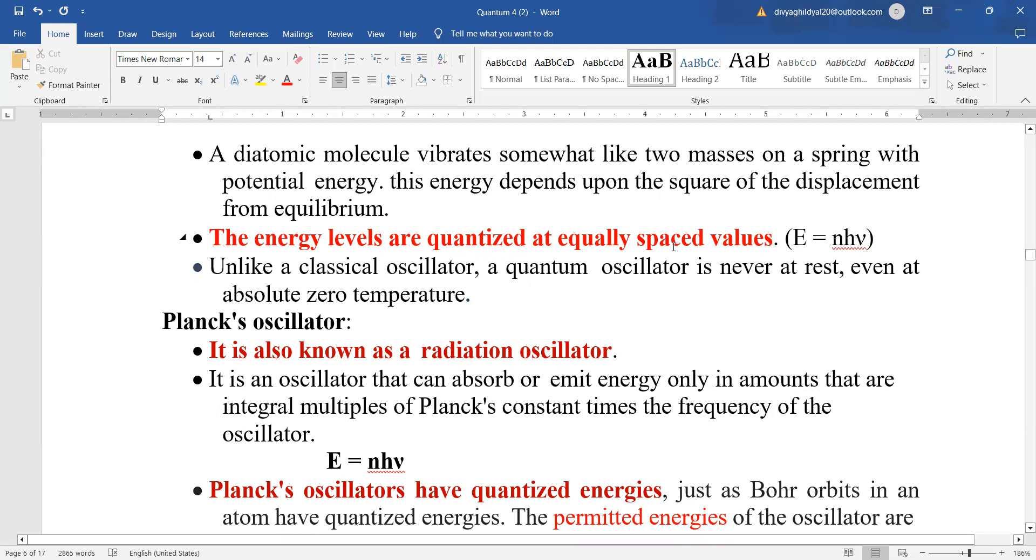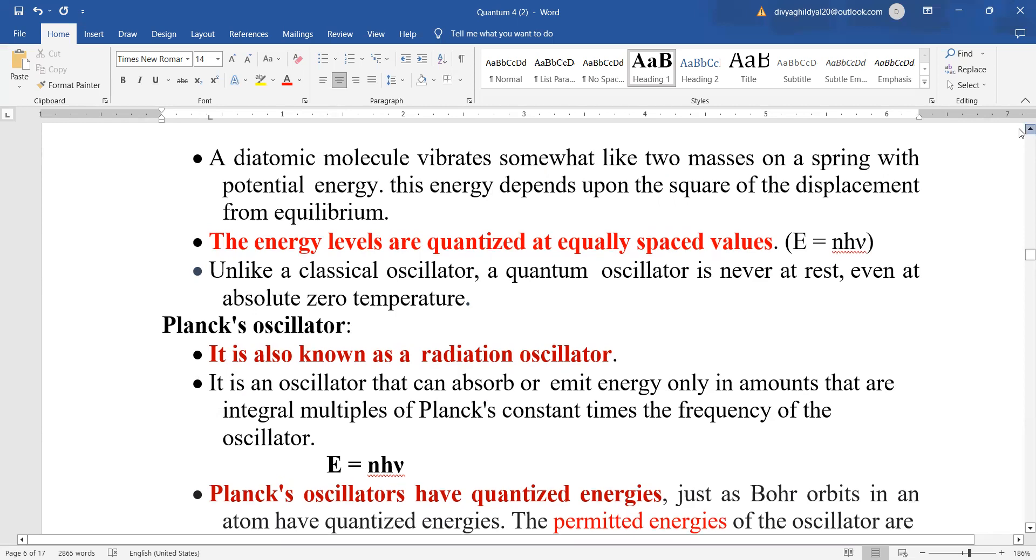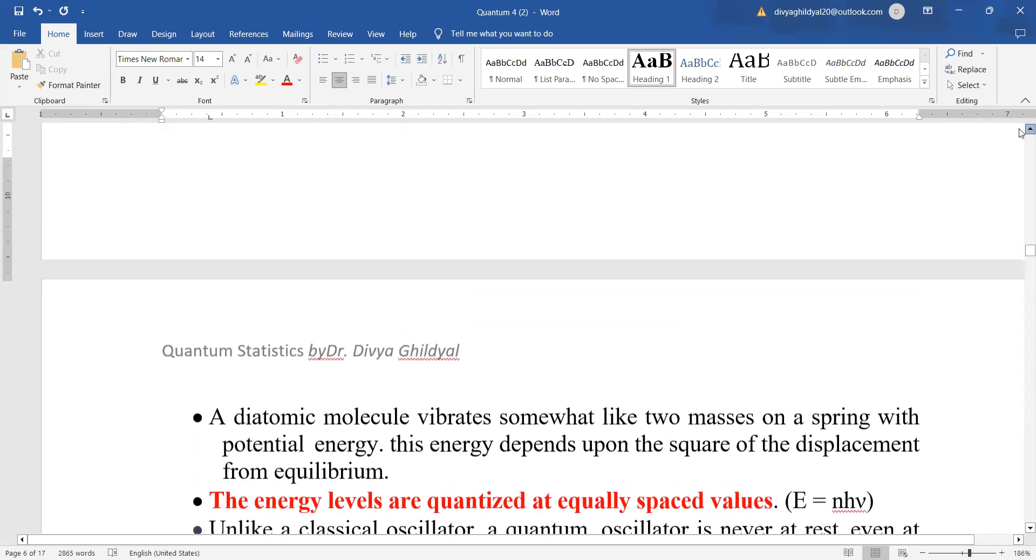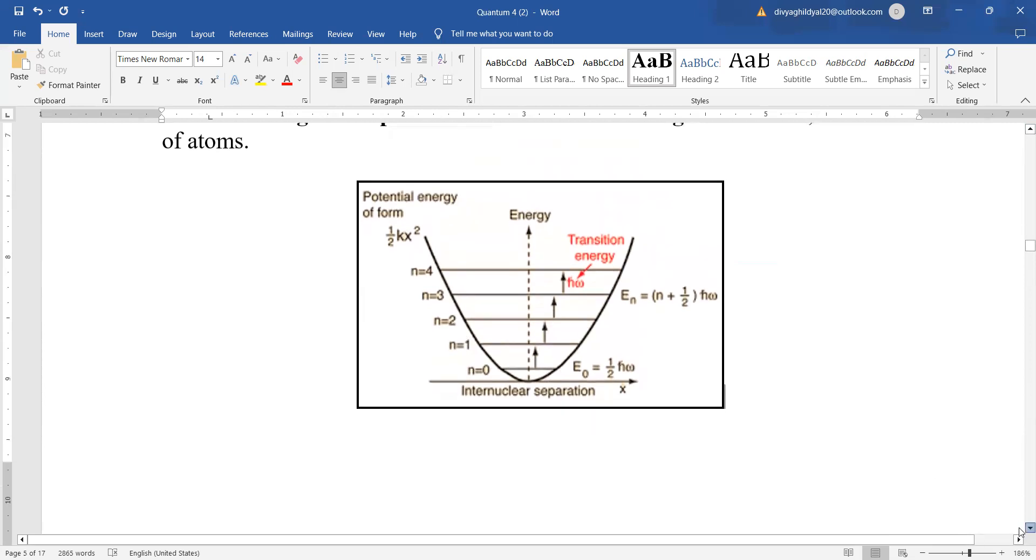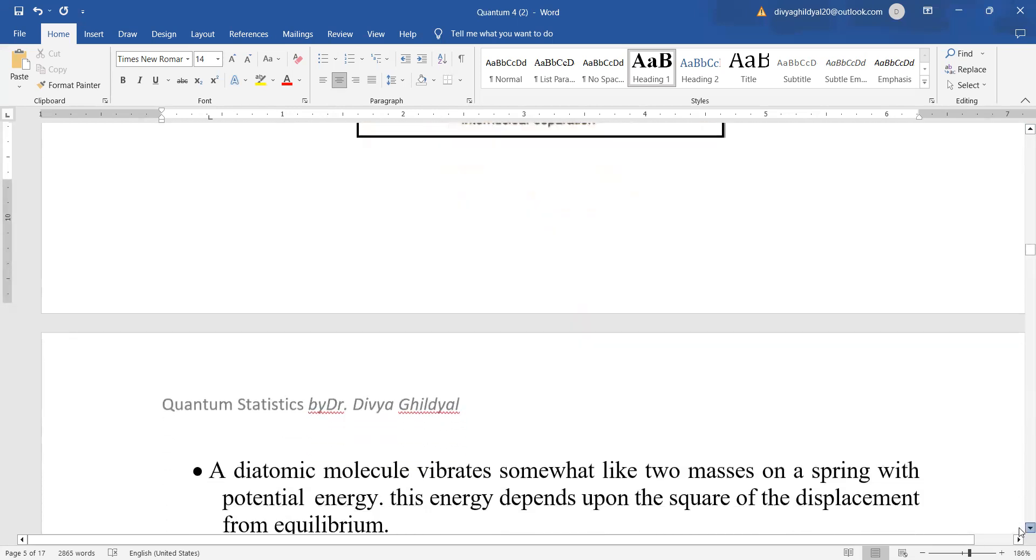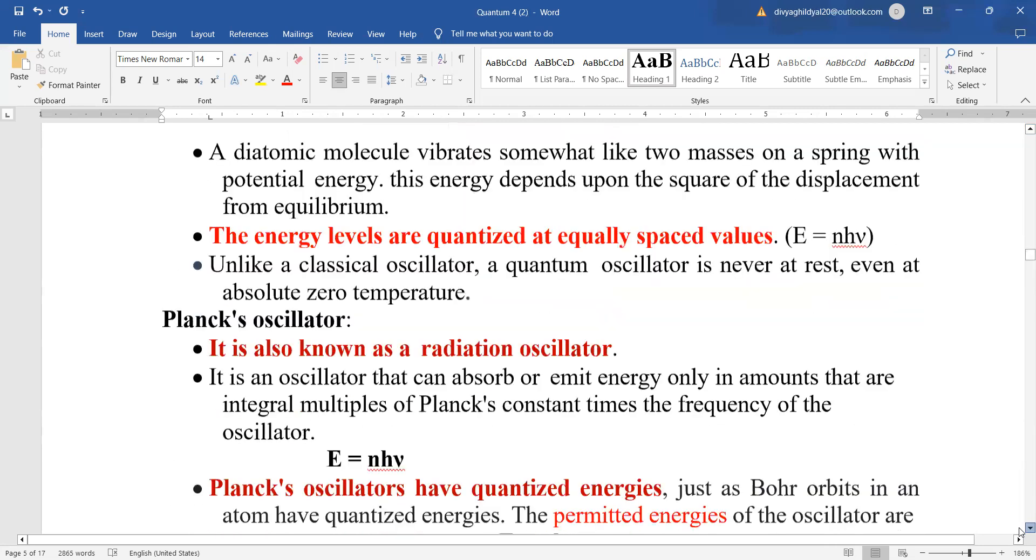The energy levels are quantized at equally spaced values. E equal to nhμ. As you can see here in this diagram, the energy levels are equally quantized at equal spacing nhμ for n equal to 1, 2, 3, 4.